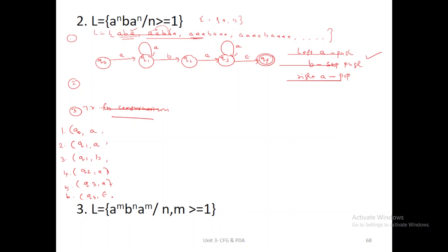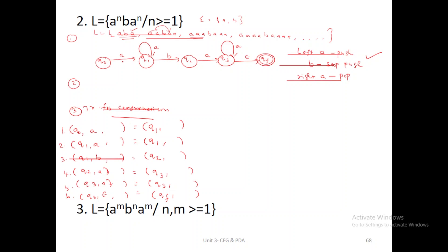We can easily fill the first parameter of the output value, which is simply filled with the given transition diagram. The outflow of Q0A is Q1. Q1A is Q1, Q1B is Q2, Q2A is Q3, Q3A is Q3, Q3 epsilon means QF. So I just fill it. The initial left-side A values up to Q1 state are A only. Q0A and Q1A are left-side A.